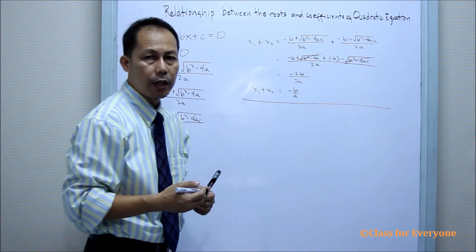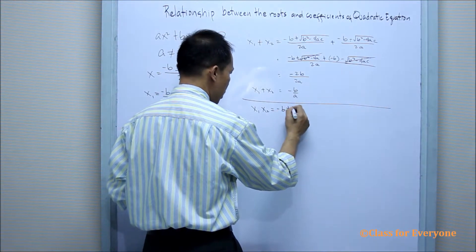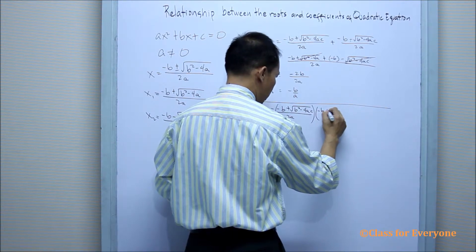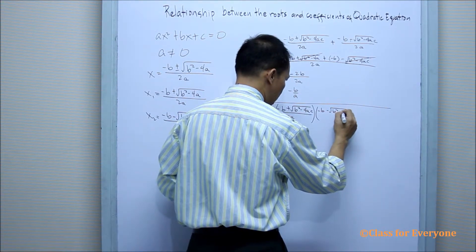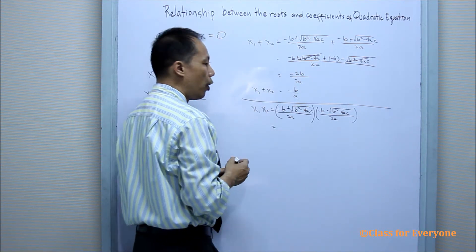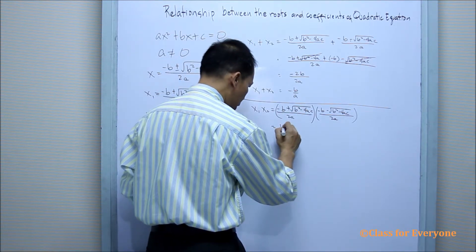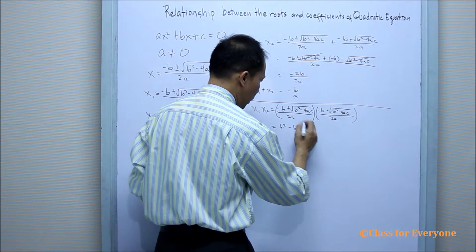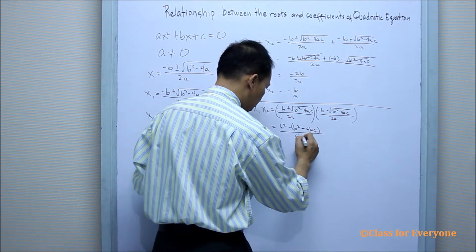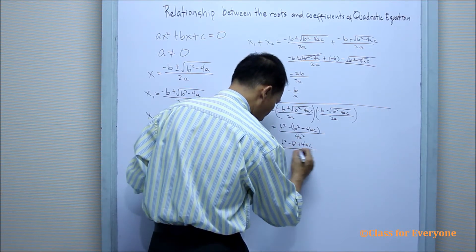Now let us find the relationship for the product of the roots. So we have x₁ times x₂, where x₁ is negative b plus the square root of b squared minus 4ac, all over 2a, multiplied by negative b minus the square root of b squared minus 4ac, all over 2a. Using the FOIL method and knowing this is a difference of two binomials, the product will be b squared minus b squared minus 4ac, all over 4a squared.